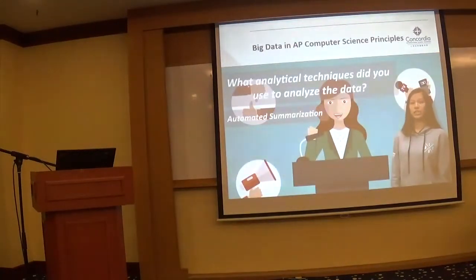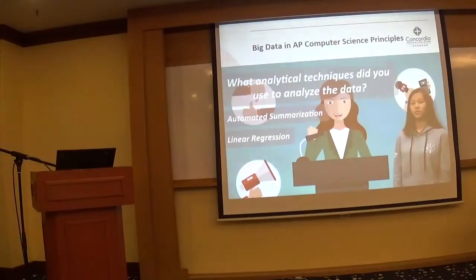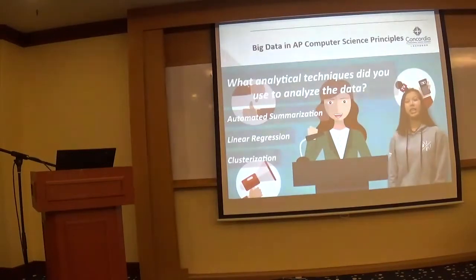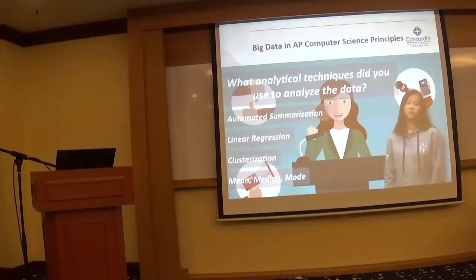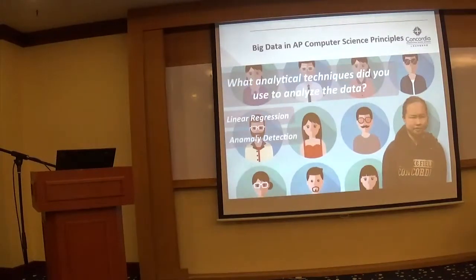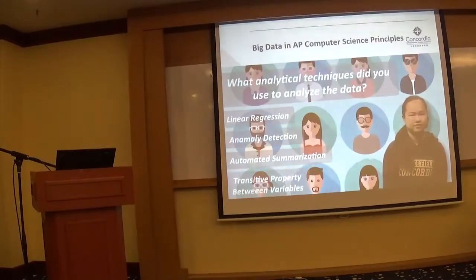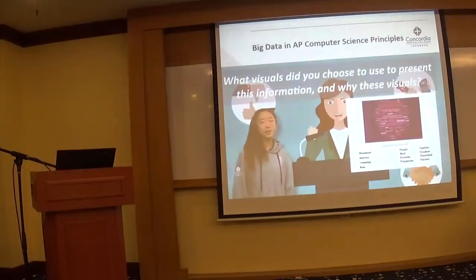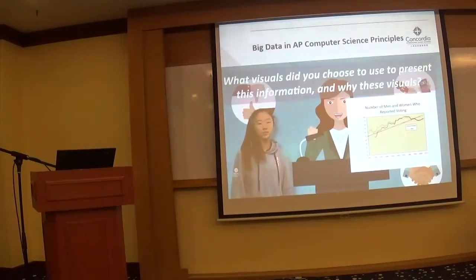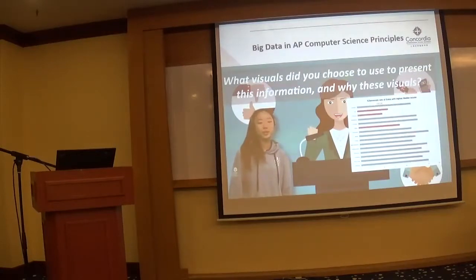Initially we used automated summarization to digest the possible factors that went into the voting decisions and electoral process. We used linear regression to draw a line of best fit to predict trends. We also used customizations to include regions of the United States to better analyze clusters, and measures of central tendency — mean, median, and mode — to look at simple measures of categories such as income, voters, race, gender, and age. Our strategies included linear regression, anomaly detection, automated summarization, and comparisons between graphs. In one aspect of our presentation, we used the transitive property between different variables to show correlation.